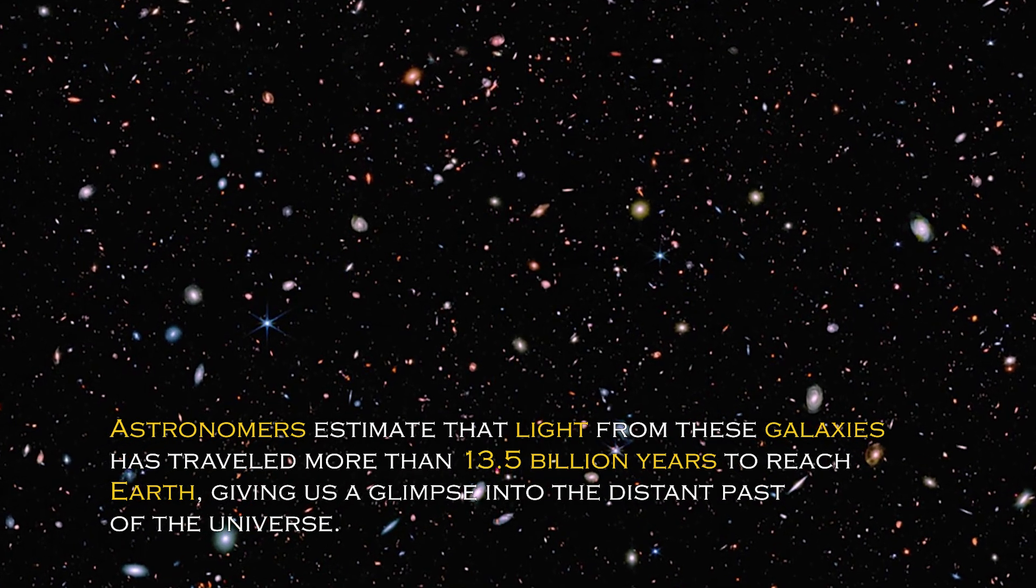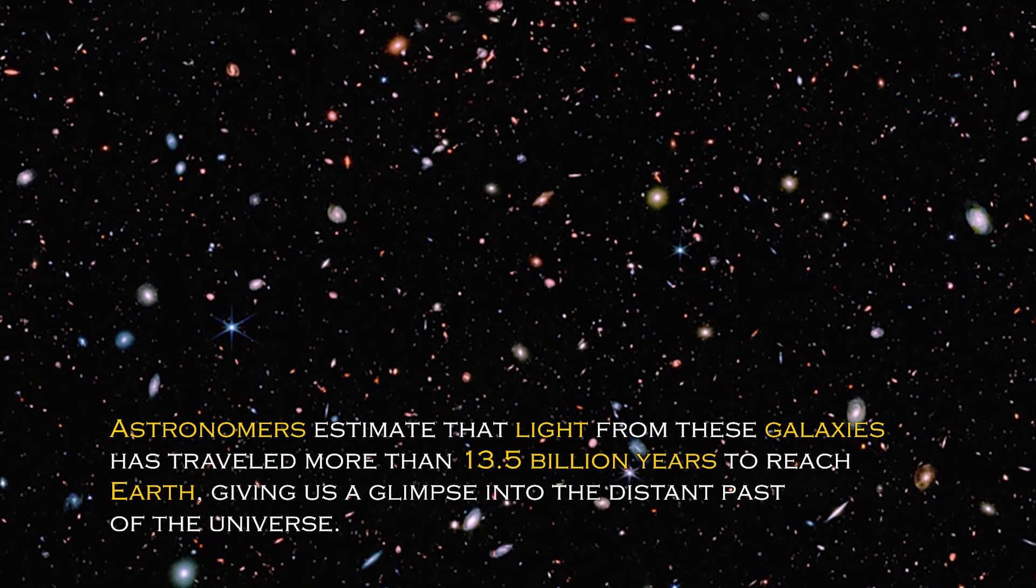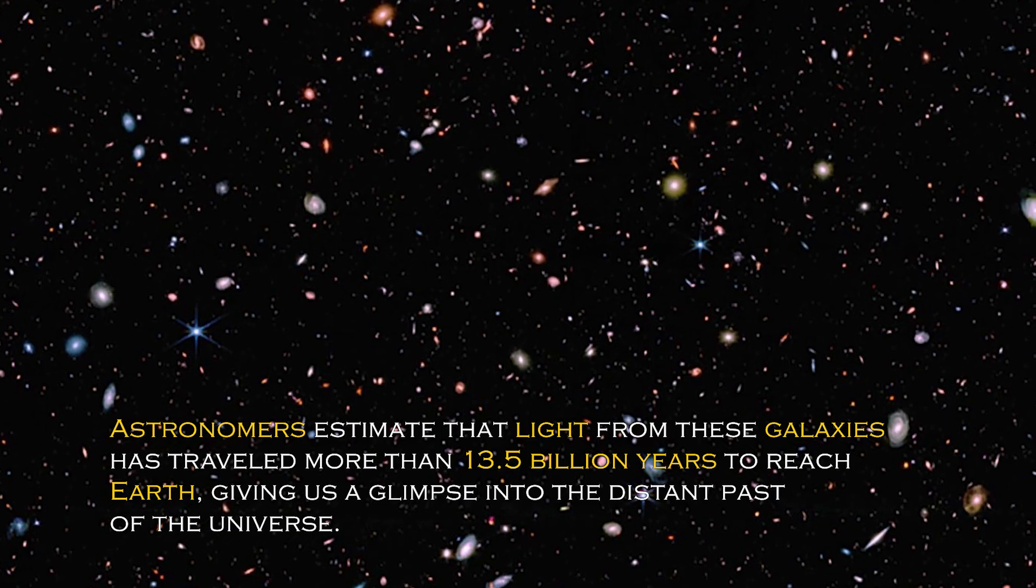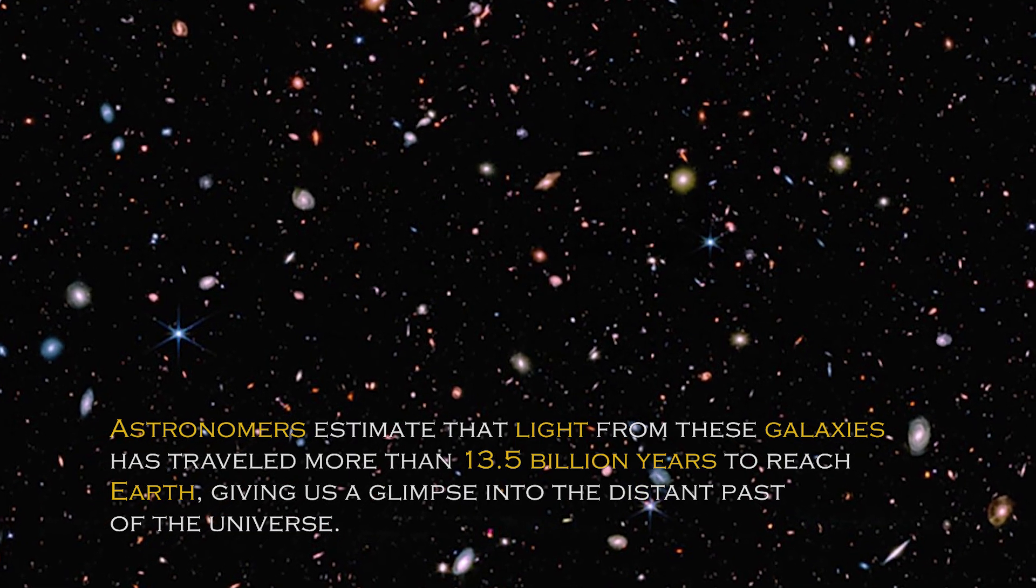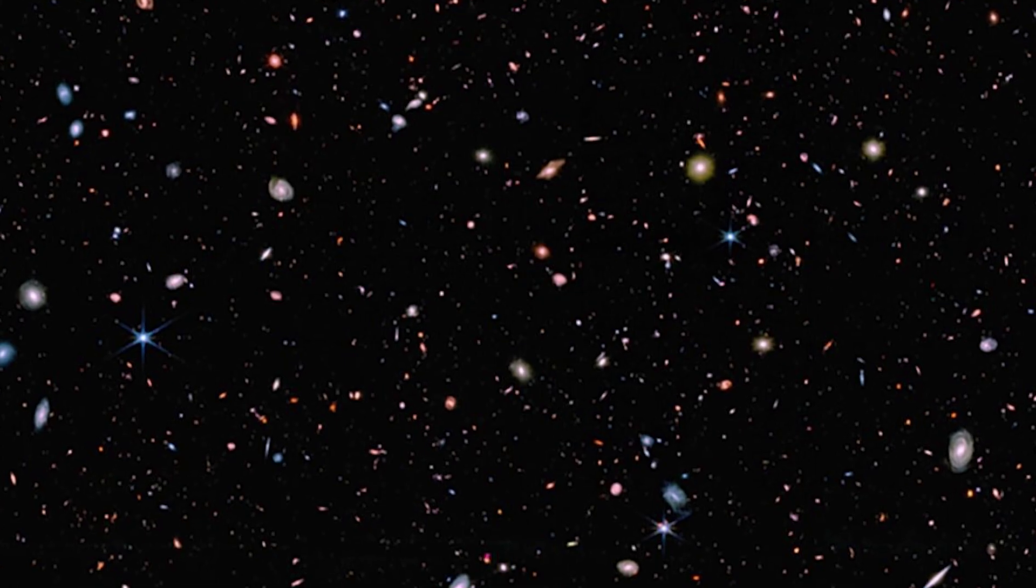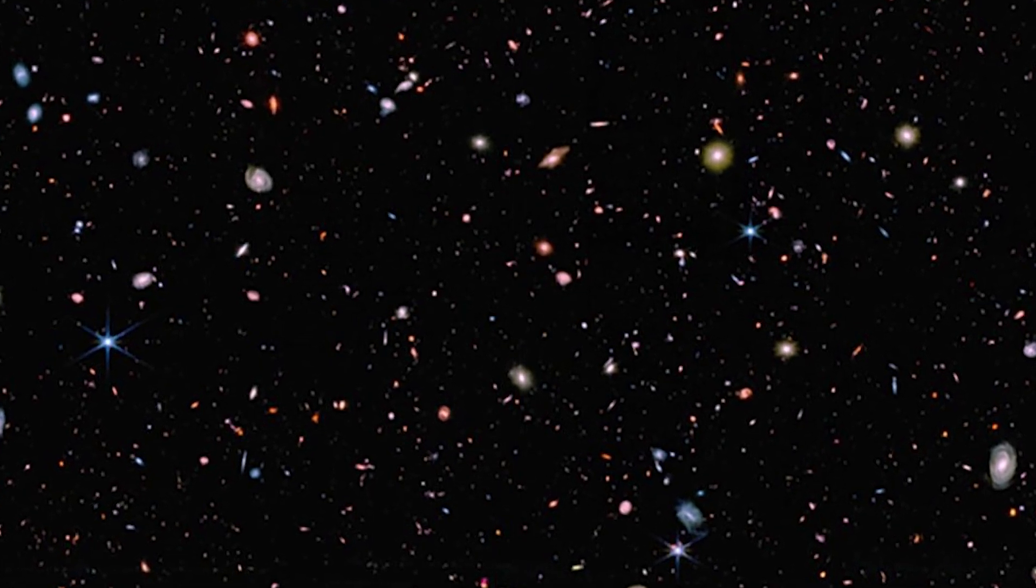Astronomers estimate that light from these galaxies has traveled more than 13.5 billion years to reach Earth, giving us a glimpse into the distant past of the universe. These galaxies were discovered when the universe was young, which sheds light on how quickly the first generations of galaxies emerged.